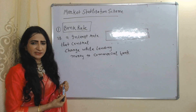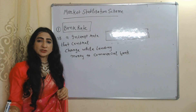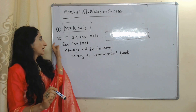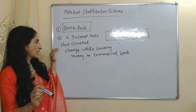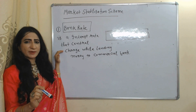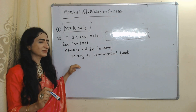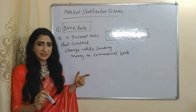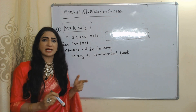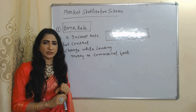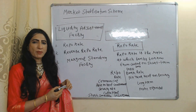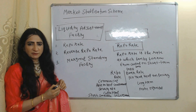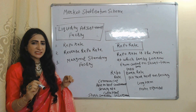Now we will see market stabilization schemes of monetary policy. The first is bank rate. Commercial banks borrow money from the central bank, and bank rate is the interest rate that the central bank charges while lending money to commercial banks.